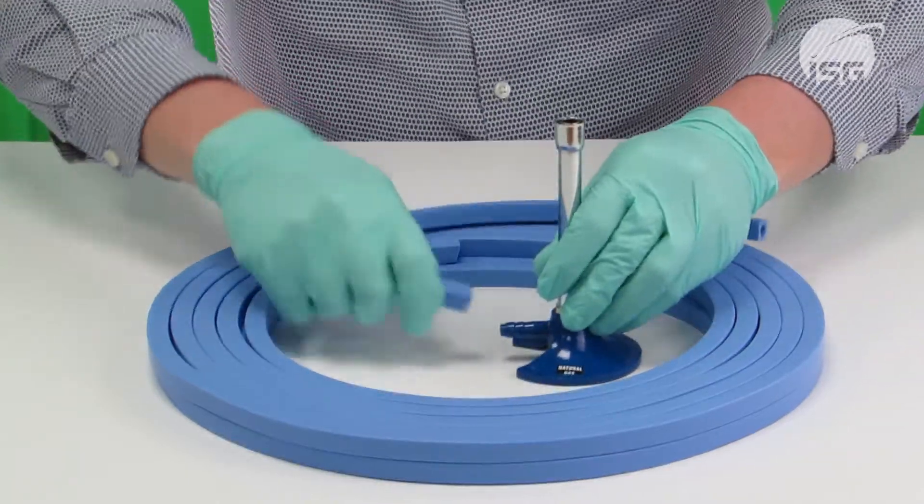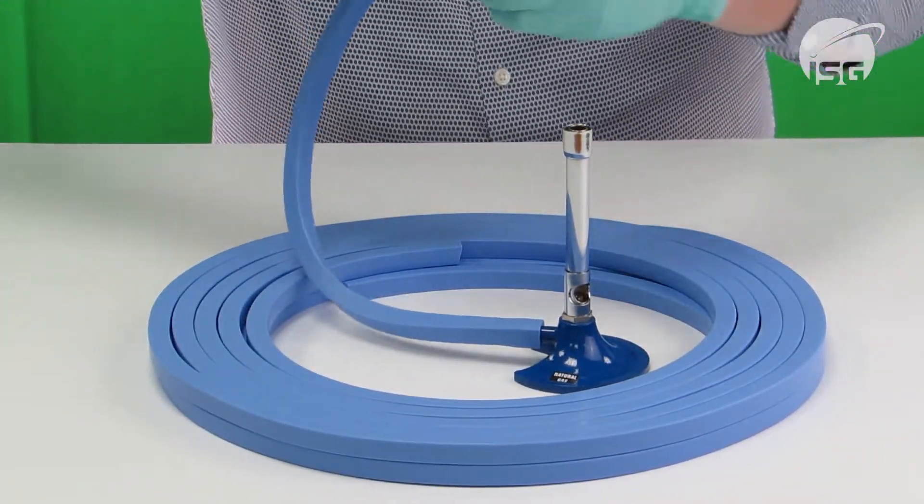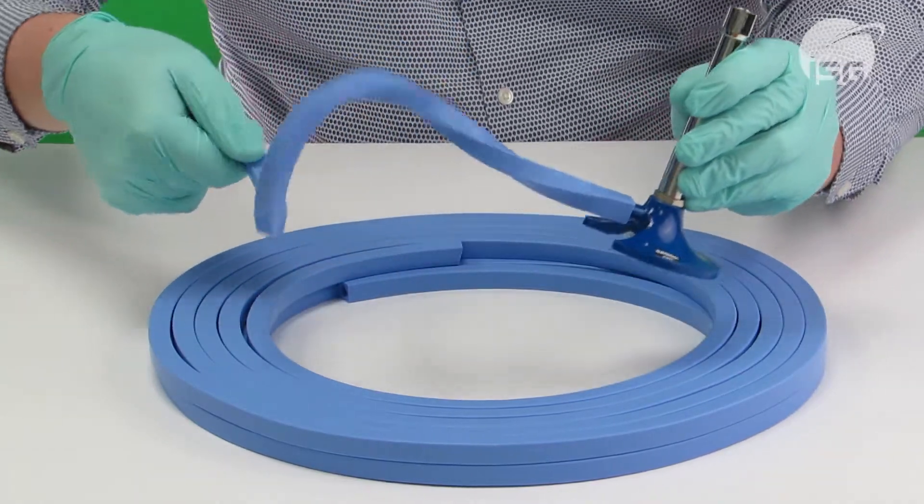The square form reduces kinking and allows the tubing to lie flat on the benchtop increasing stability when using with a Bunsen burner.